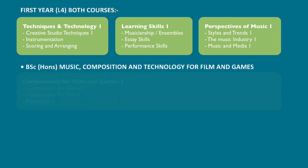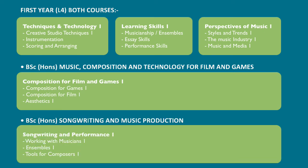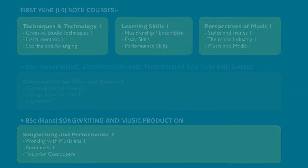Students on the Music Composition for Film and Games course then look in detail at the aesthetics for composing for film and games, while students on the Songwriting and Music Production course look at ways of working with musicians and ensembles, alongside a topic called Tools for Composers, which explores various techniques that composers use in order to write engaging music.